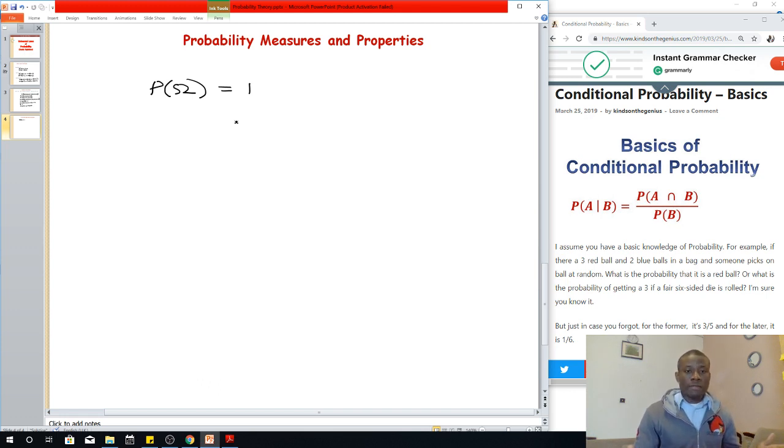When you have a set of items in the sample space, the probability that an event happens from that sample space is one because all the probabilities have to be in that sample space. Take note that this sample space has subsets, of which the empty set is a subset of the sample space.